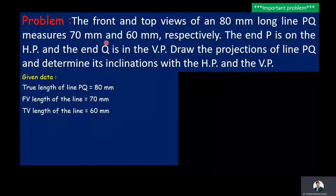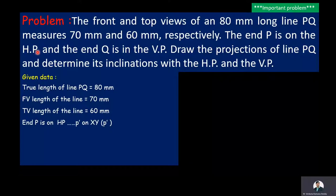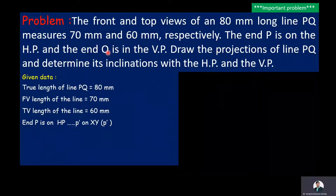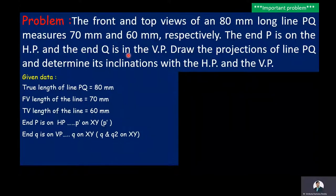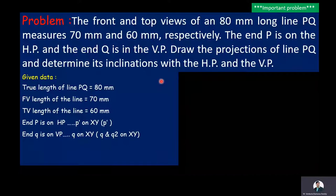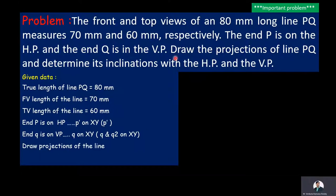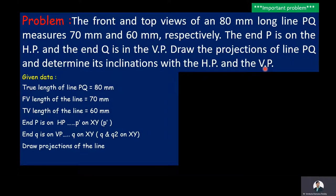The end P is on the HP, so its front view P' falls on the XY line. The other end Q is in the VP, so its top view falls on the XY line — that is, Q falls on the XY line. Our objective is to draw the final projections of the line in the front view as well as the top view.